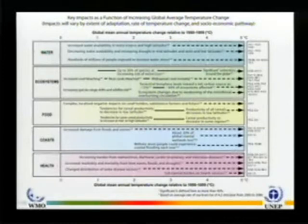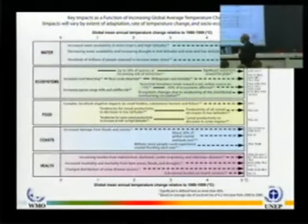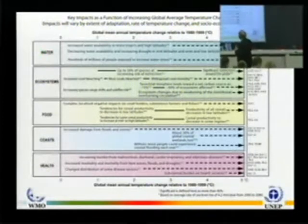For ecosystems: up to 30% of species facing extinction with two to three degrees of warming. Corals — we know they're being bleached now. Widespread coral mortality by about three degrees.